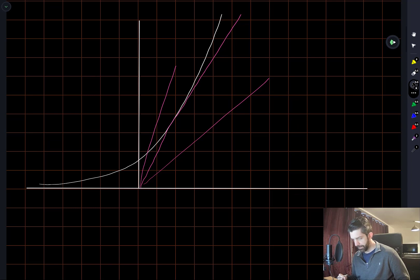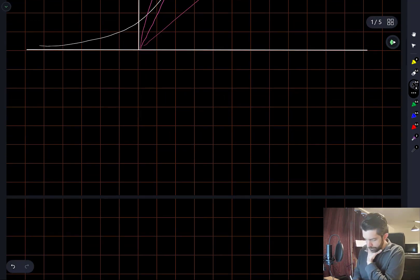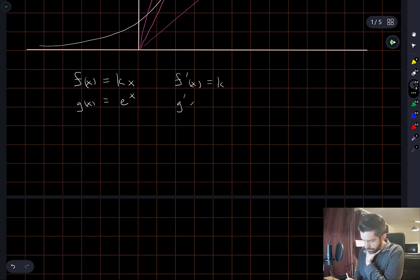I think maybe one easy way to do this is let's look for the case when there's only one solution, and let's do that by thinking about maybe doing that by matching the derivative. So let's say f of x is kx, and g of x is e to the x. F prime is the constant k. G prime is the function e to the x.